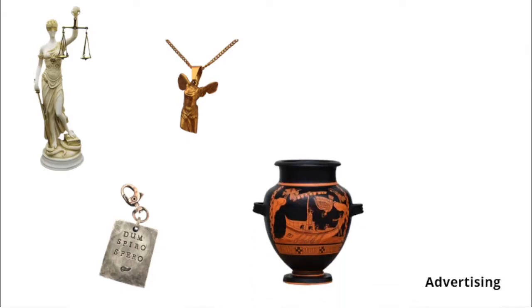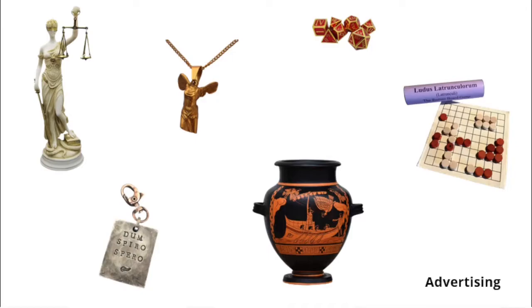Please allow me some short advertising. Left-hand side you see a statue of Justitia, the Roman goddess of justice, blindfolded with her scales and a sword. On the right side there is the real Naik, the Greek goddess of victory. Dum spiro spiro. While I breathe, I hope. Here we see the copy of a famous red figure pottery, Odysseus passing the Sirenes. The Romans loved gamings, for example, Ludus Latrunculorum or just dices. If you are interested, I give you the link to the stores below.